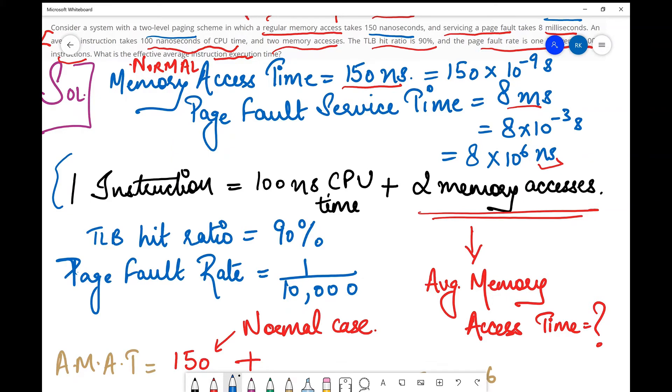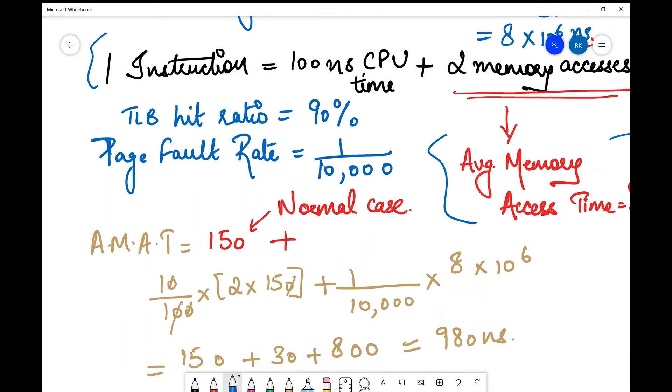I have two quantities given in nanoseconds and one in milliseconds, so I convert all three to nanoseconds. Then I write: one instruction equals 100 nanoseconds of CPU time plus two memory accesses. I don't have average memory access time, which I need to find out. It's better to write given things and put a question mark in front of things you need to find.